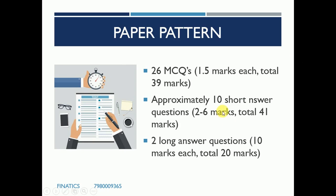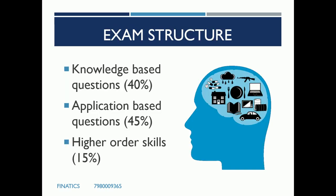The paper pattern consists of 26 MCQs at 1.5 marks each, totalling 39 marks. Then there are approximately 10 short answer questions of 2 to 6 marks, totalling 41 marks. Finally, there are two long answer questions of 10 marks each, totalling 20 marks. There is no negative marking. You need to structure your answers well — knowing what to write, where to write more and where to write less — which comes with practice.